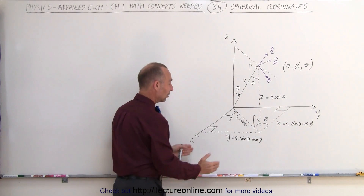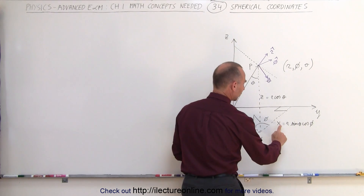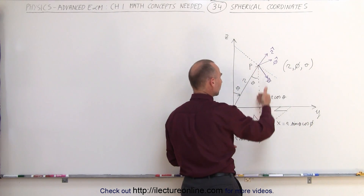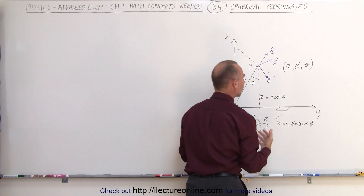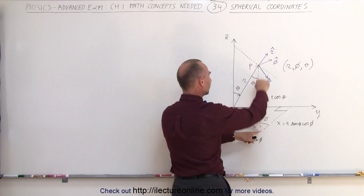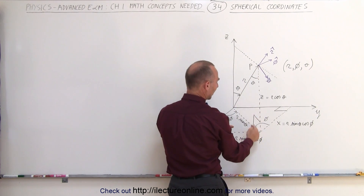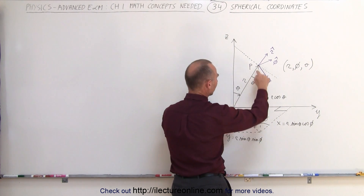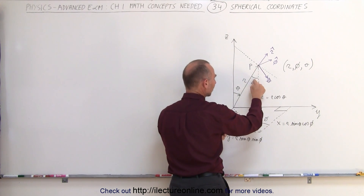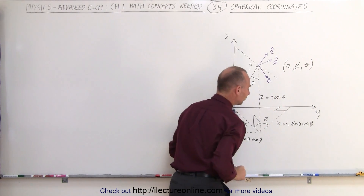Now we've defined y and x in terms of R, theta, and phi. We also need to determine z in terms of R, theta, and phi. Looking at the original triangle, the hypotenuse is R, and z is the adjacent side to the angle theta. Therefore z can be described as R times the cosine of theta.